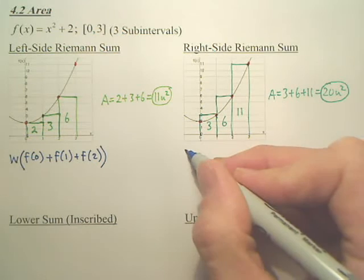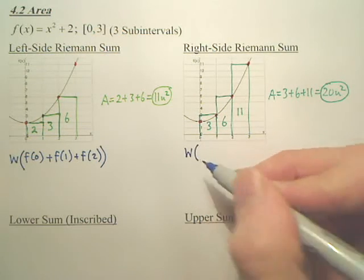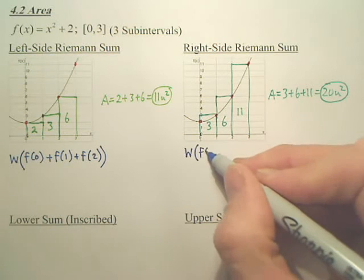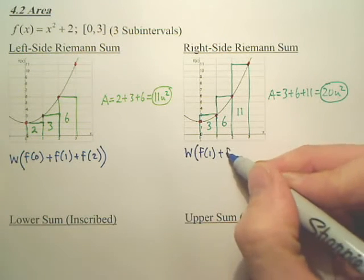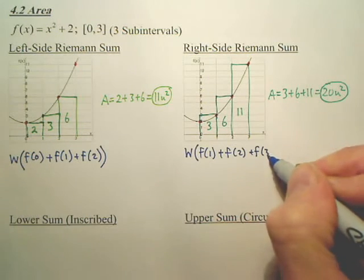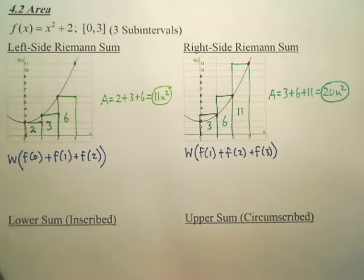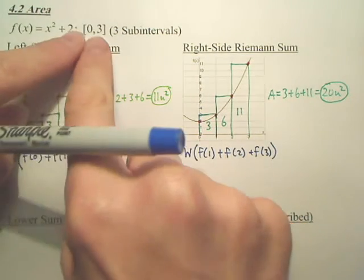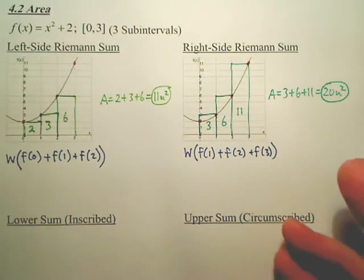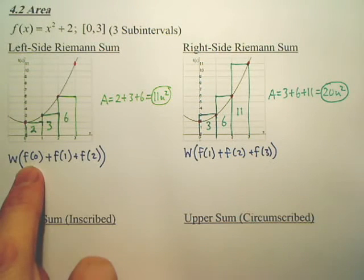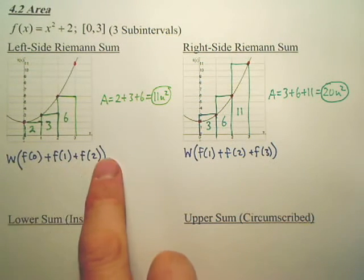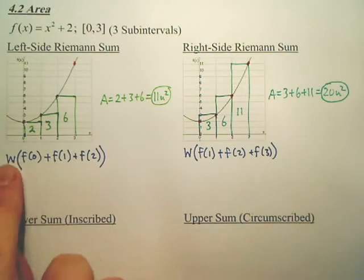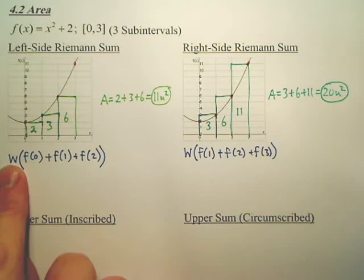That's how you would do it here. Now, this one would be width times what? Which one did you start with? Did you start with f of 1, plus f of 2, plus f of 3? Now, are you always going to be 0, 1, 2, 1, 2, 3? No, it depends on the interval, depends on how wide the interval is, but do you see how, if you didn't want to make the graph, here's how you would do it mathematically. If you just had an equation, you could plug in the values, find the heights, multiply it by the one set width, and we're done.